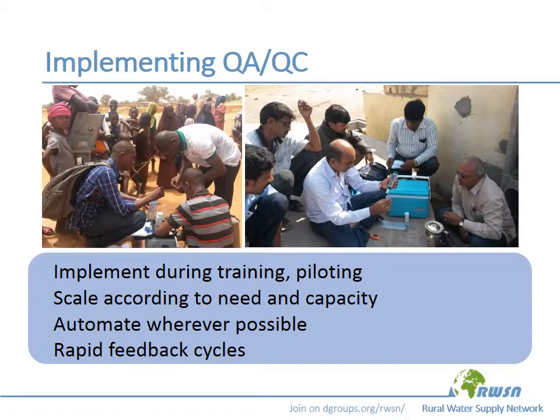In implementing QAQC in a routine monitoring system, it's helpful to plan for it from the beginning, implement it during training and piloting, and scale our QC methods as needed to ensure that we get high quality data. Wherever possible, we can automate checks using rule-based validation to make sure that our results have at least reasonable validity, and give rapid feedback as quickly as possible so that teams in the field can find out if there's anything they need to change about the way that they're collecting, transporting, or analyzing samples.